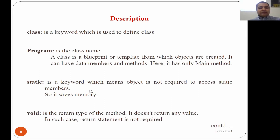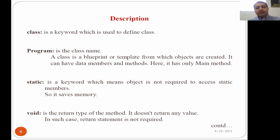The static keyword means an object is not required to access static members, so it saves memory. Whenever you want to run a program, the main body executes first. Main is the initiation point of executing a program — it is the only method first called by the compiler. But before executing main, we cannot create any object, so how do we trigger the main body?